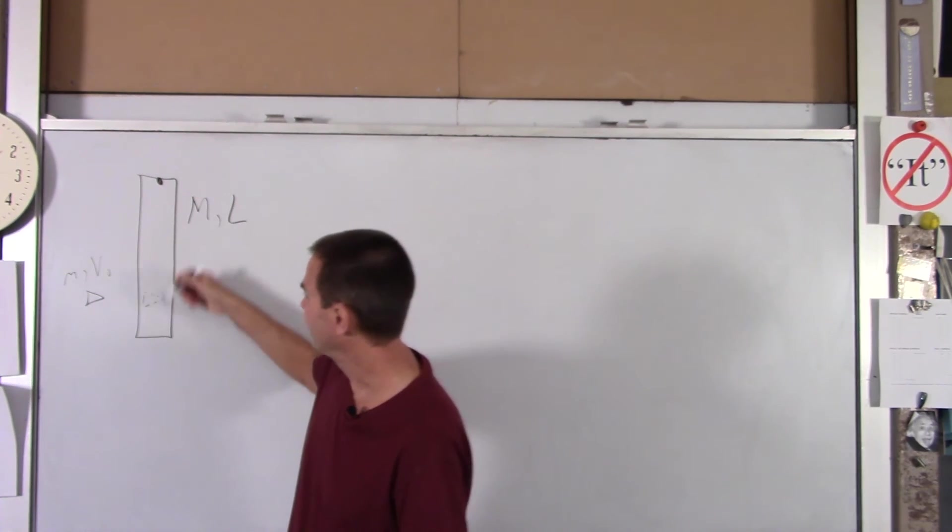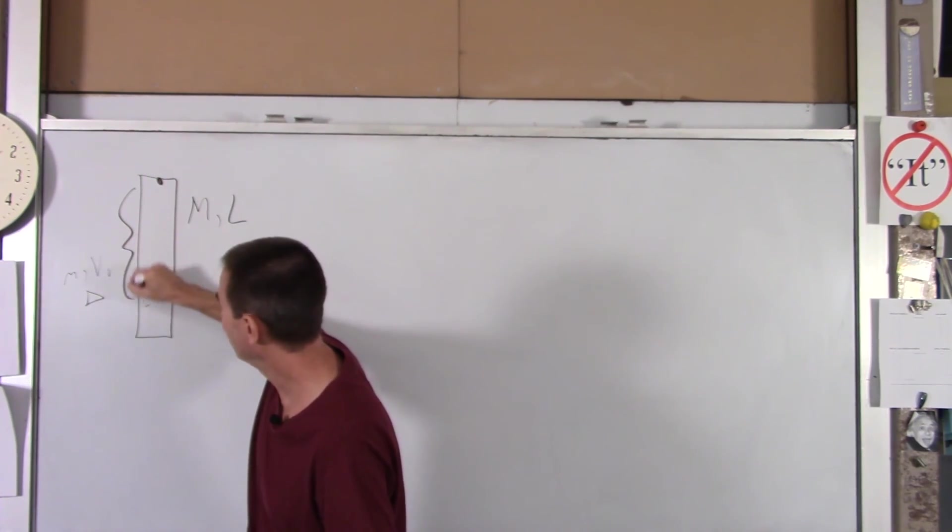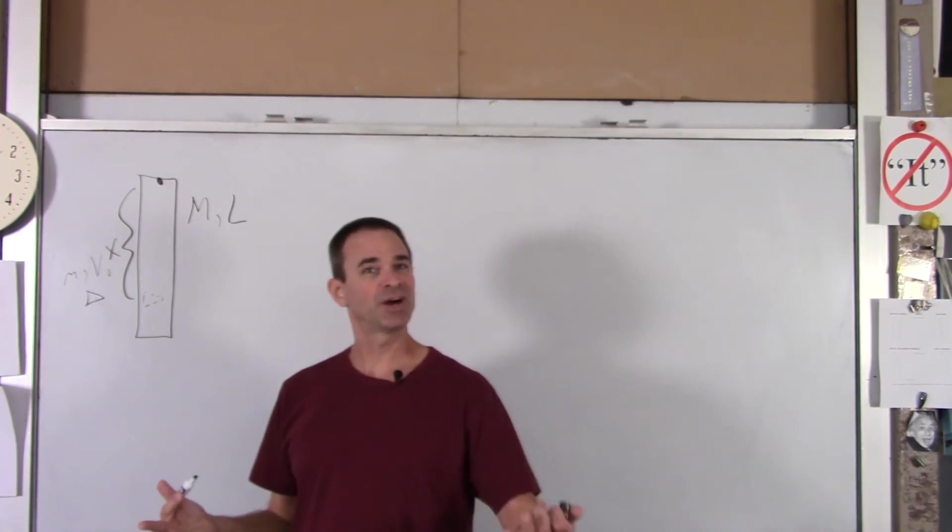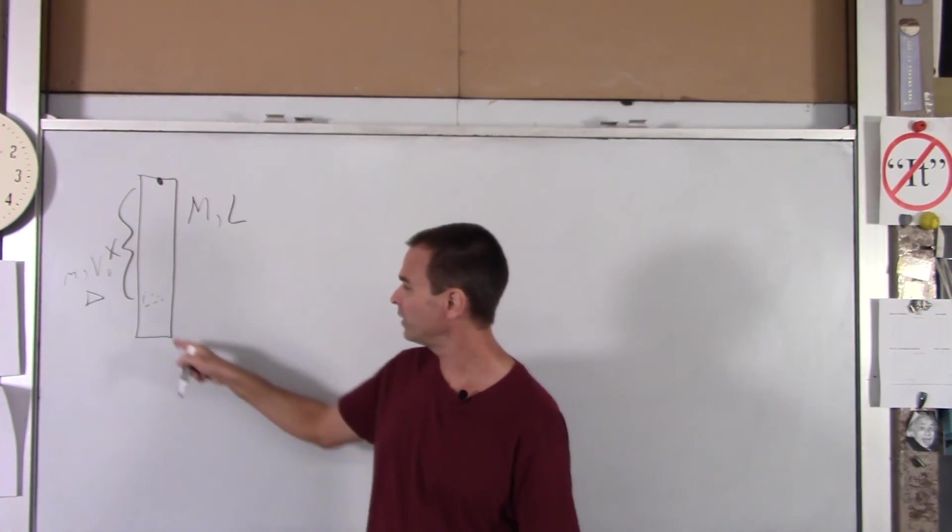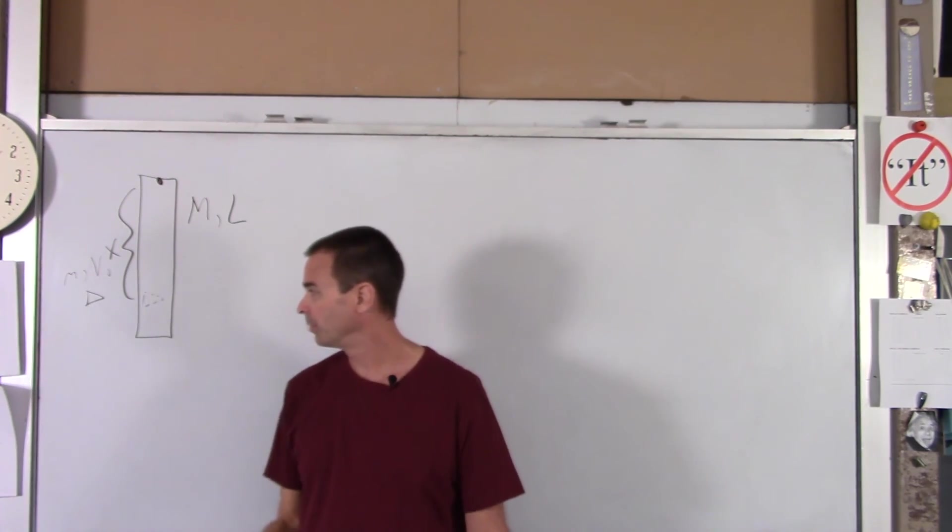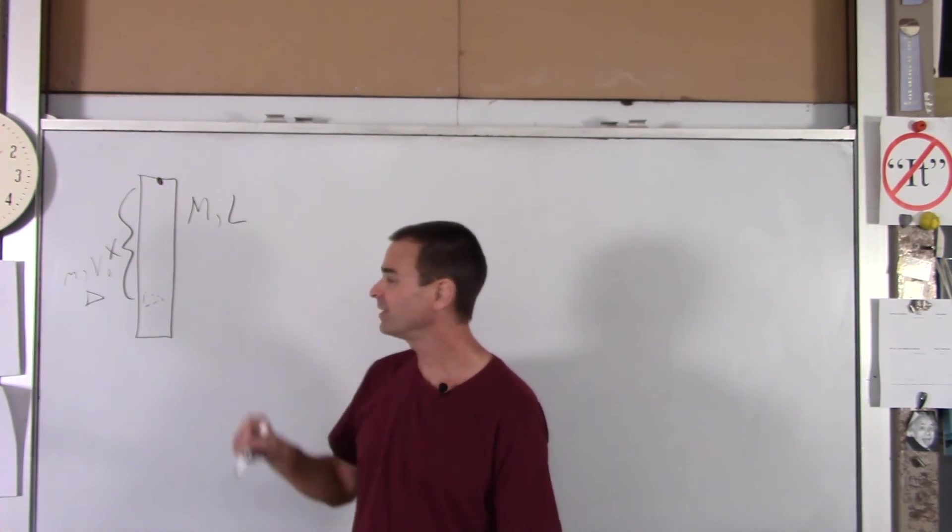The projectile has a mass little m, and it's going at some velocity v-naught horizontally, and it's going to stick to, embed itself in the rod. It's not hitting at the end of the rod. We'll call that distance x. And in terms of the givens and fundamental constants, we're going to determine what is the angular velocity of our rod bullet system immediately after the impact.